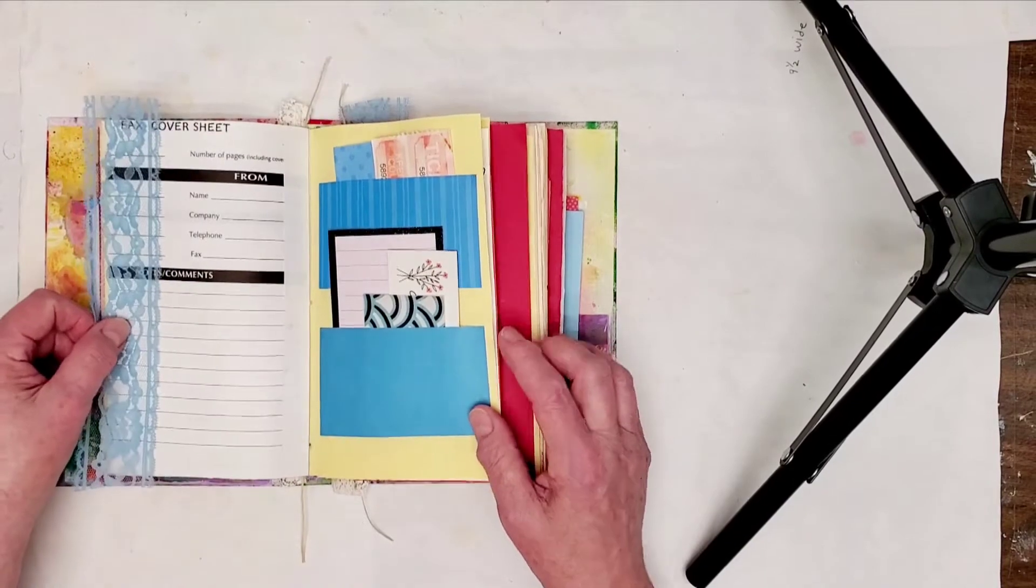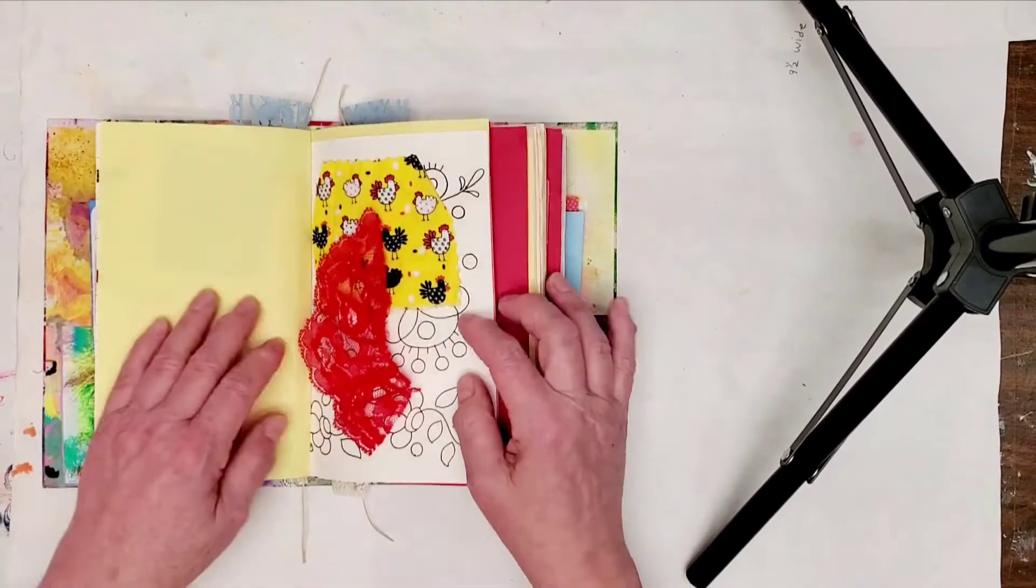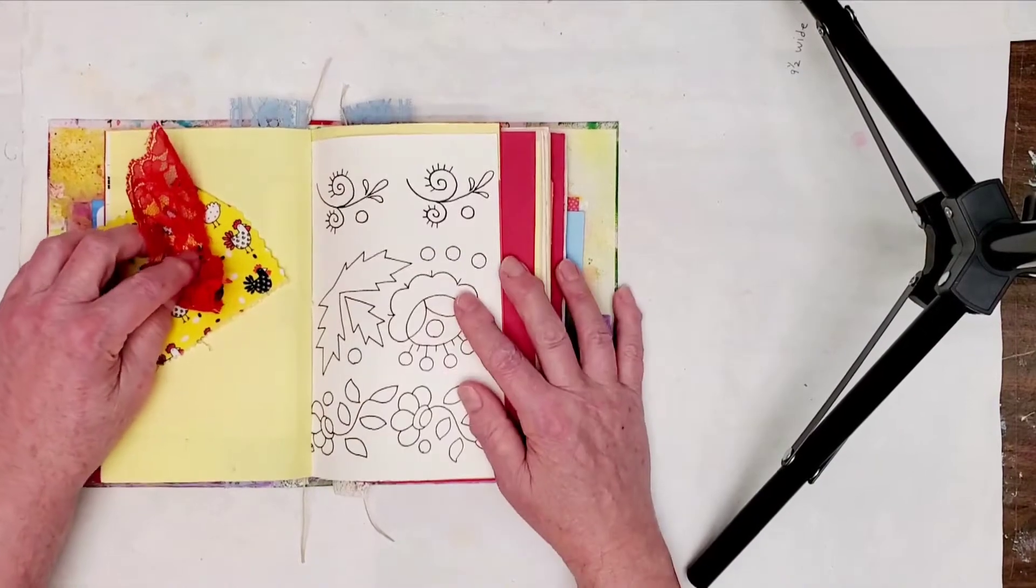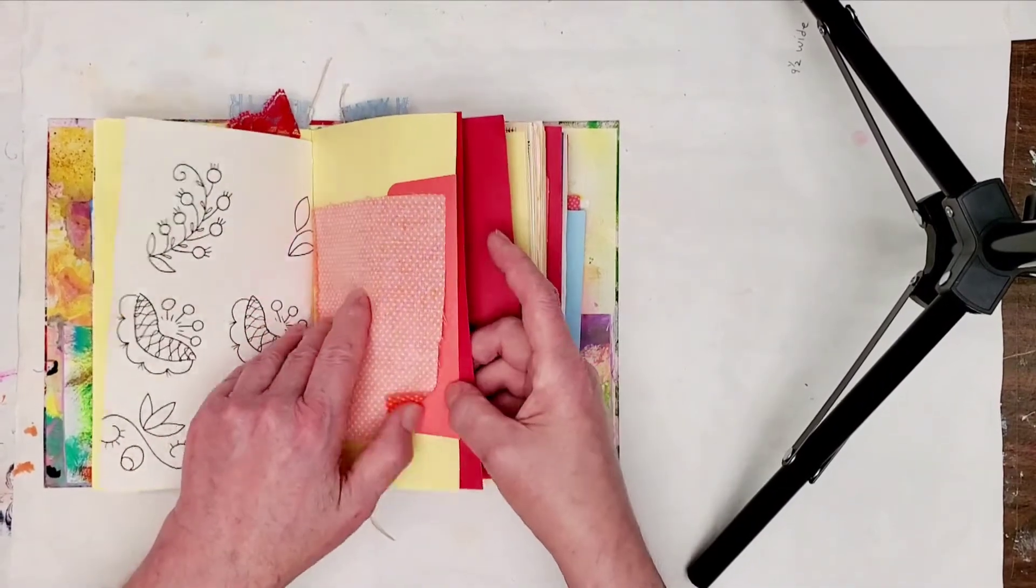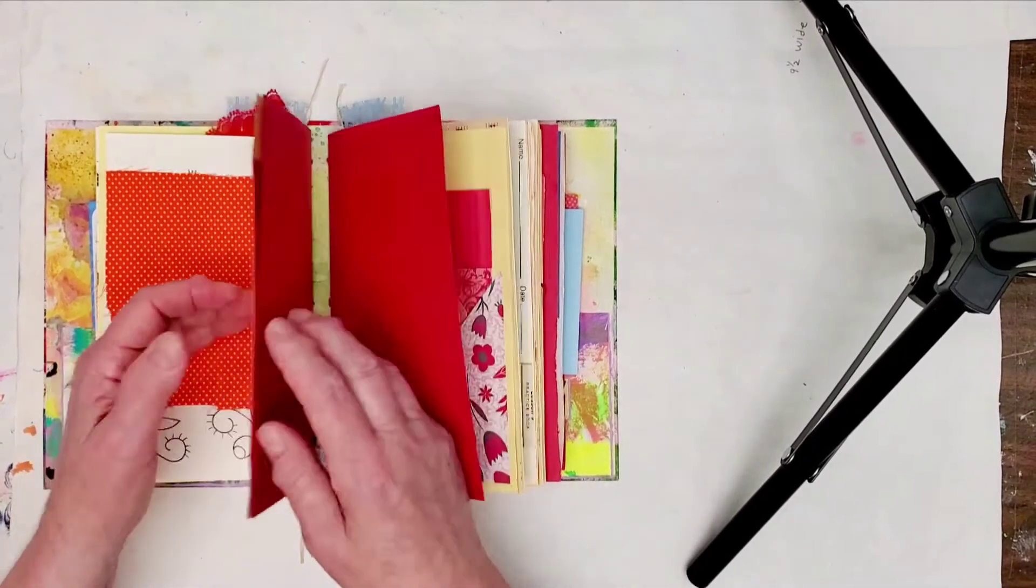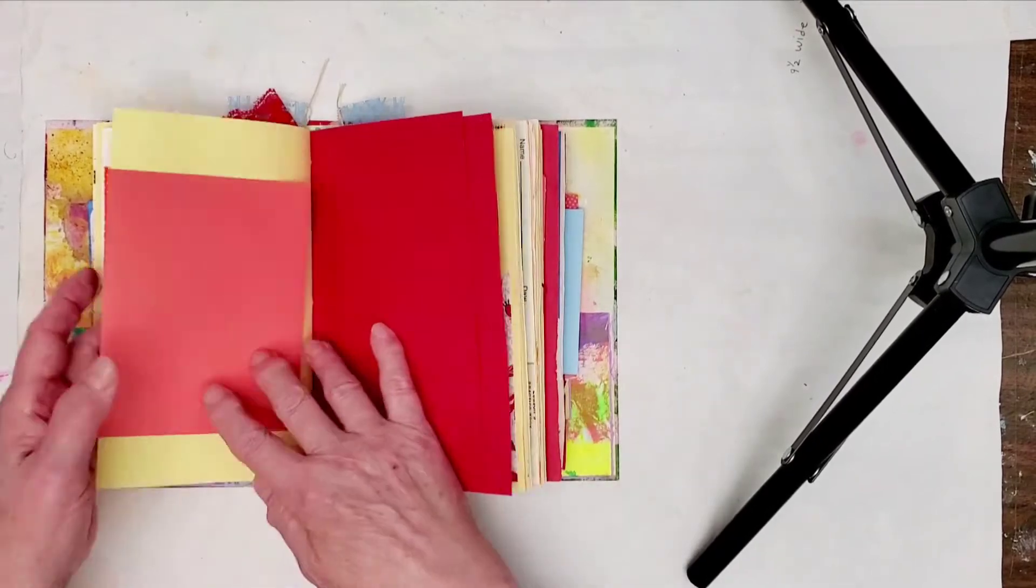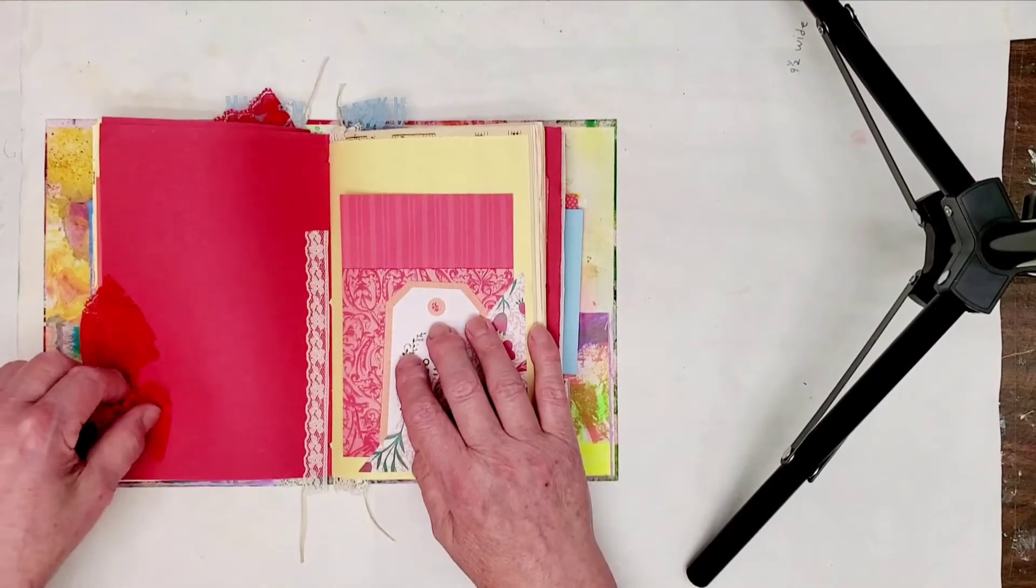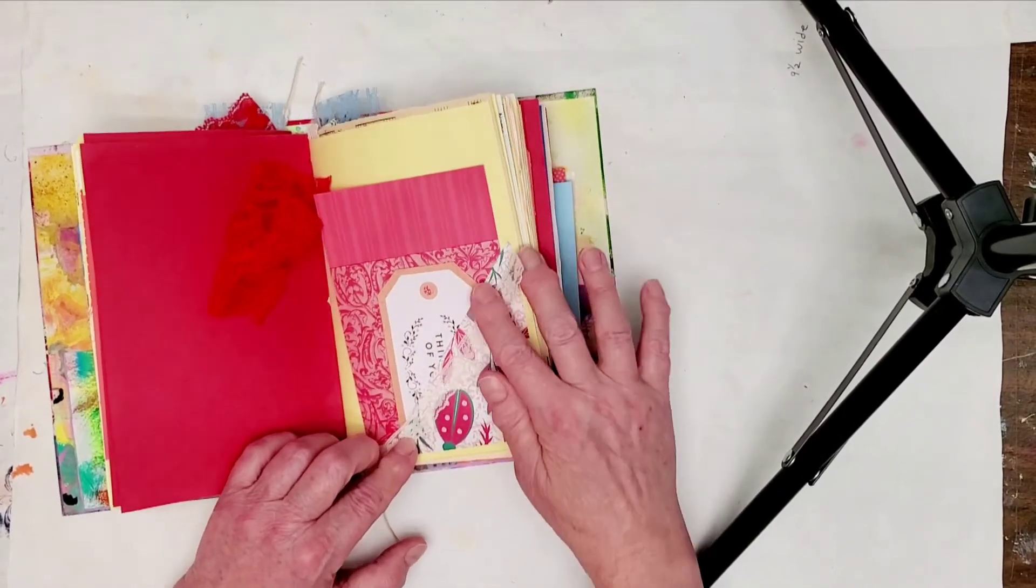Some fabric I thought would be nice on this side and my pocket with the papers. Some of them are still plain but you can see where I'm going with that one. The two pockets, and now I want to use this on this side. And then this page I'm going to use this orange, and that's just an envelope that I've glued over the edge here.